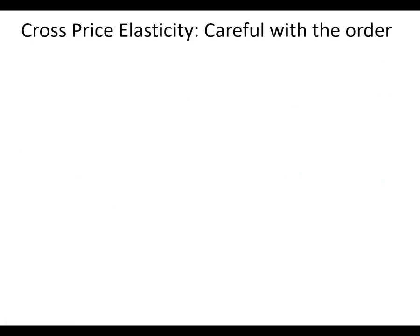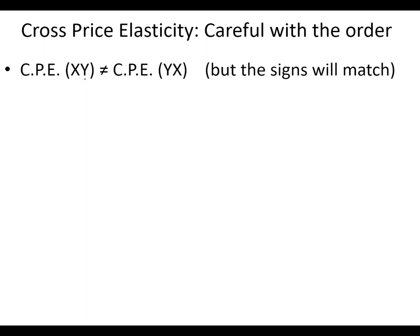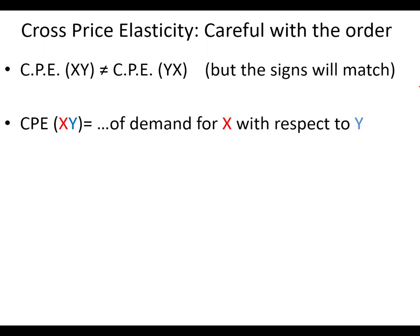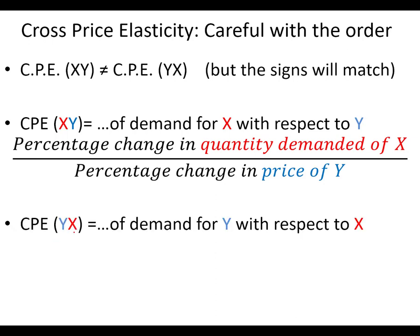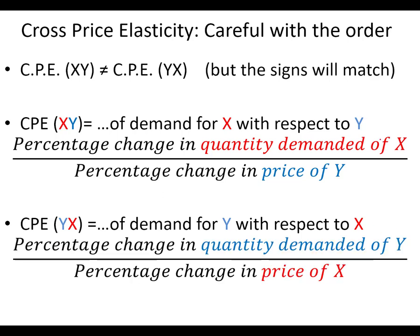Be careful with the order of the two goods, because the cross-price elasticity of x with respect to y is not the same as the cross-price elasticity of y with respect to x. You will get the signs to match — if pens and pencils are substitutes, pencils and pens are also substitutes — but the numeric values won't necessarily be equal. The cross-price elasticity of x with respect to y looks at the quantity demanded for x and the price of y, while the cross-price elasticity of y with respect to x looks at the quantity demanded for y and the price change of x. Don't expect them to be reciprocals either; the only relationship they have is the same sign.